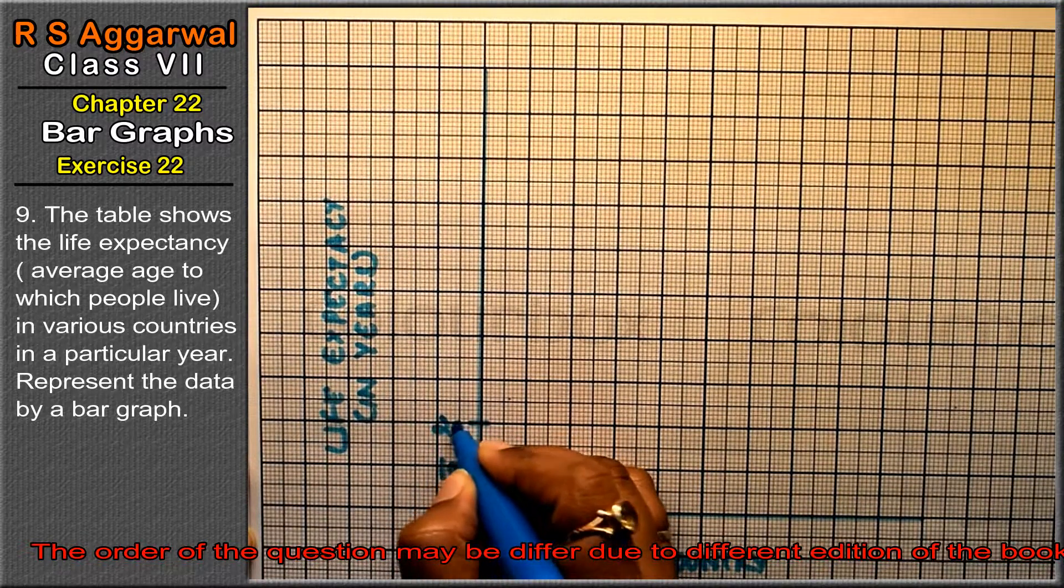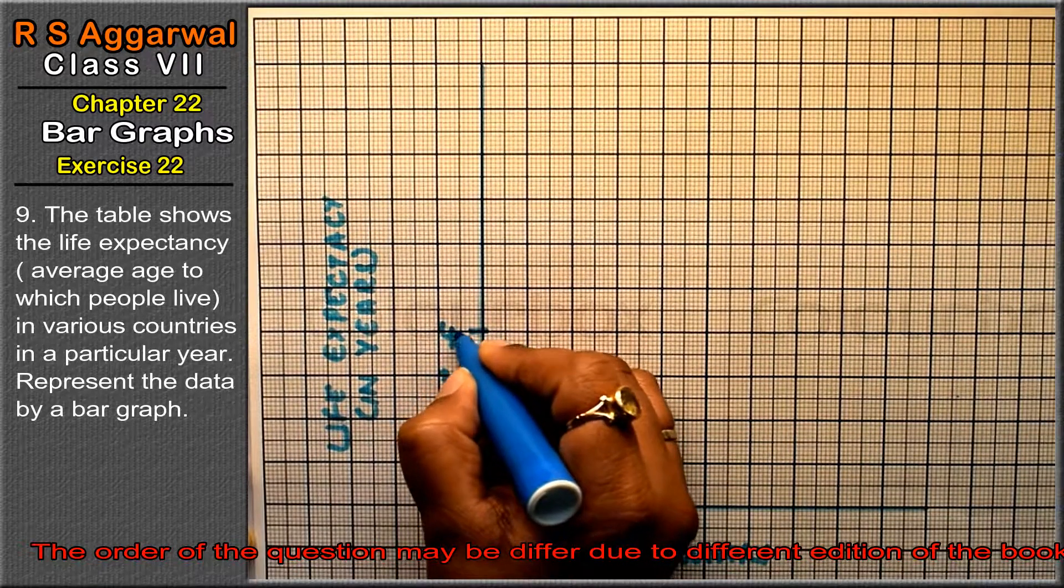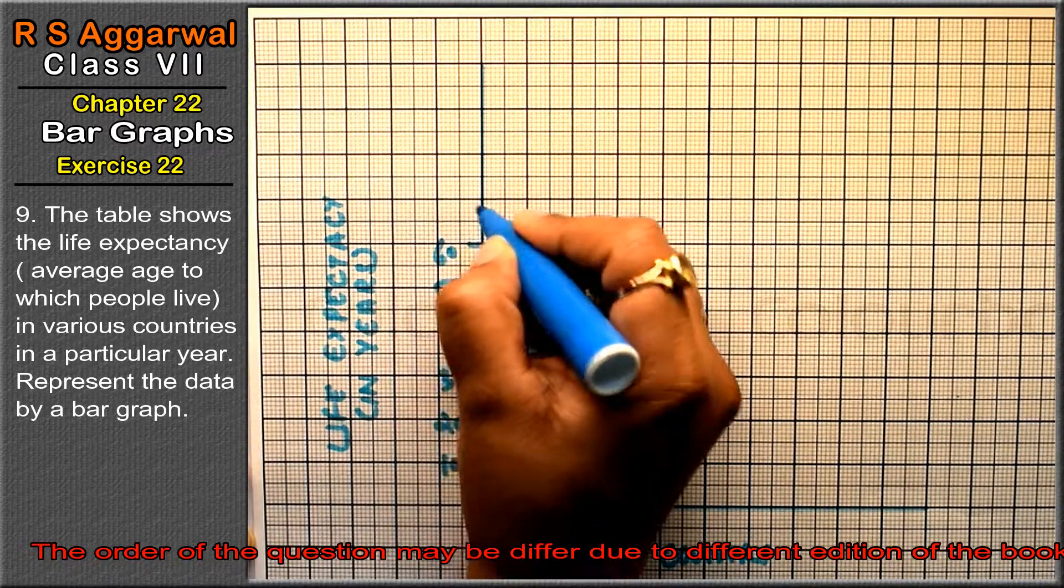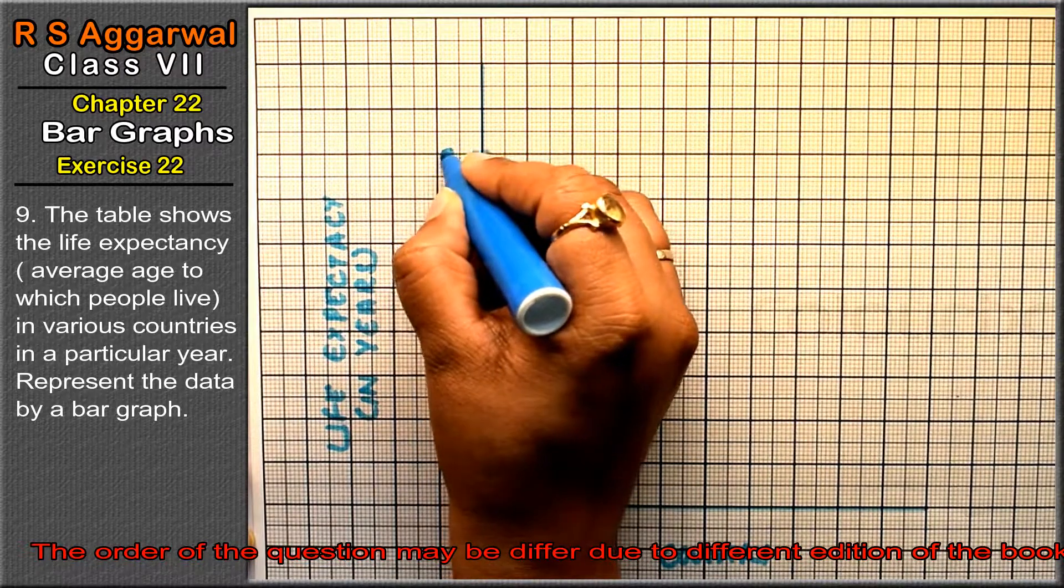We mark 10, 20, 30, 40, 50, 60, 70, and 80 on the y-axis.